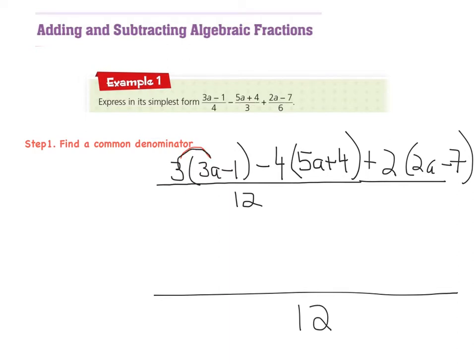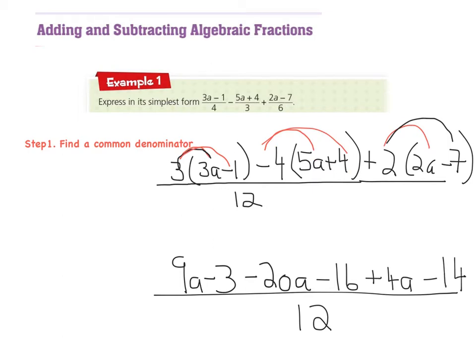So 3 times 3a gives me 9a. And 3 times minus 1 gives me minus 3. The next one is minus 4 times 5a. So minus 4 times 5a gives me minus 20a. And minus 4 times plus 4 gives me minus 16. And the next one is 2 times 2a gives me 4a. So plus 4a. And plus 2 times minus 7. A plus by a minus gives me a minus. And 2 7s are 14. Okay, so on the top here, my answer is 9a minus 3 minus 20a minus 16 plus 4a minus 14. And so our next step is, once we've worked out the brackets, our next step here would be to simplify.